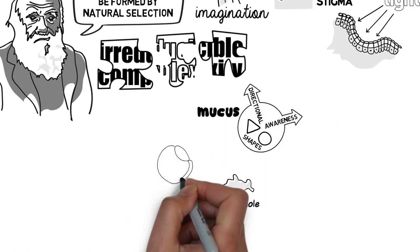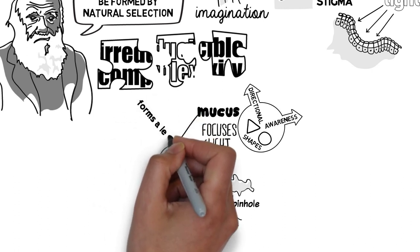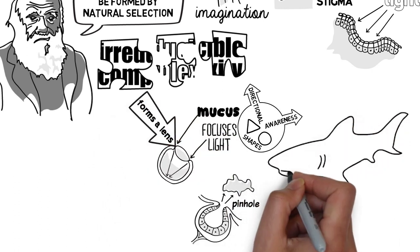Mucus secreted from the light-sensitive cells focuses the light reducing the blurriness and as the mucus hardens it forms a proper lens. This lens provides a clear, sharp and detailed image.